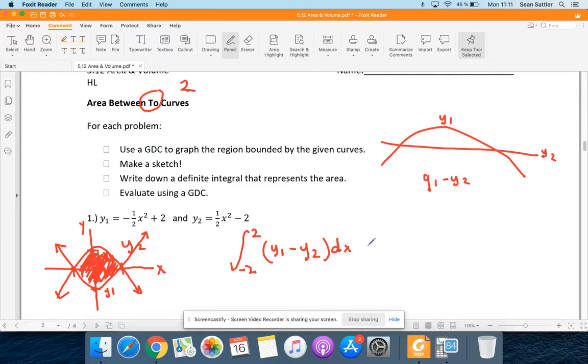From negative two to two, y1, so that's going to be negative one-half x squared plus two, and then we're going to subtract, subtract this whole equation.